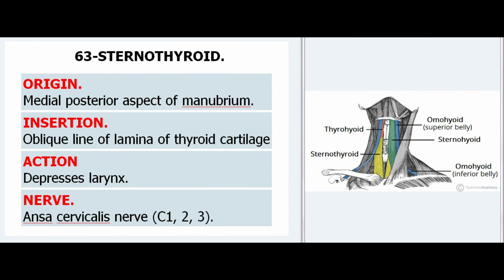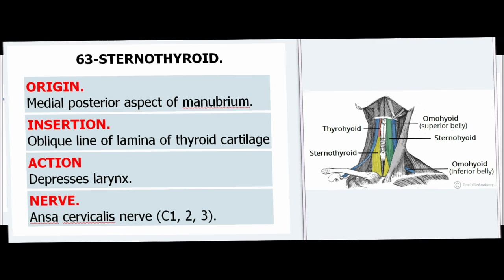63. Sternothyroid. Origin: Medial posterior aspect of manubrium. Insertion: Oblique line of lamina of thyroid cartilage. Action: Depresses larynx. Nerve: Ansa cervicalis nerve, C1–2–3.